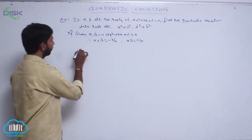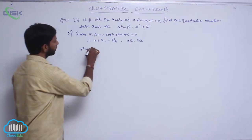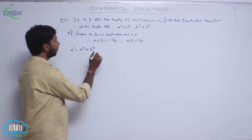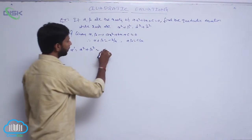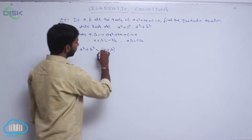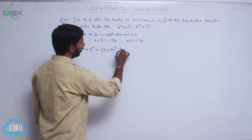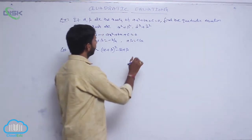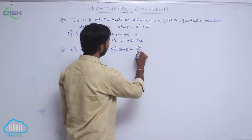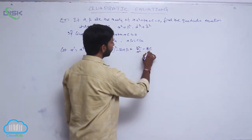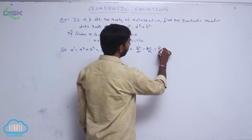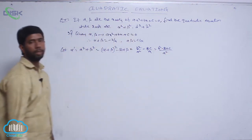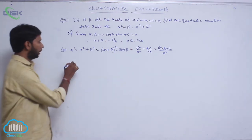Now find the value of alpha² + beta², which can be considered as alpha' = alpha² + beta². Here a² + b² can be written as (a+b)² - 2ab, that is (alpha + beta)² - 2·alpha·beta = b²/a² - 2c/a = (b² - 2ac)/a². So the first root is (b² - 2ac)/a².